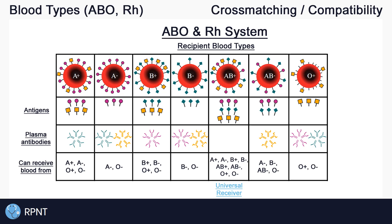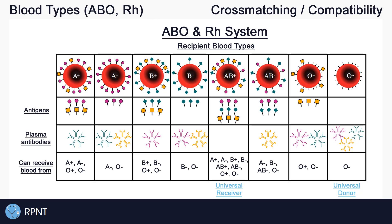Someone with O positive blood has Rh antigens, A antibodies, and B antibodies. They can receive blood from anyone without A or B antigens, which includes O positive and O negative. Someone with O negative blood has no antigens, has Rh antibodies, A antibodies, and B antibodies. They can only receive blood from other type O donors. Type O negative blood is considered the universal donor, as they can give or donate to any blood type, but can only receive from their own.